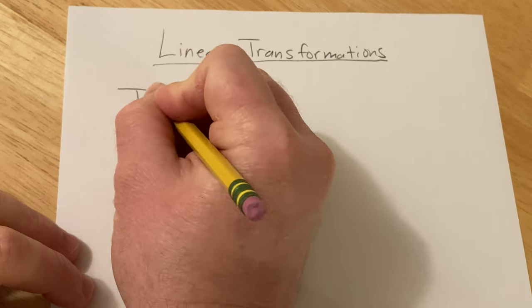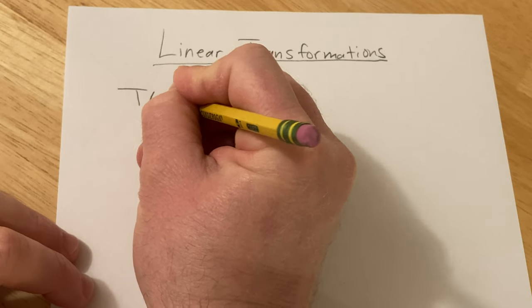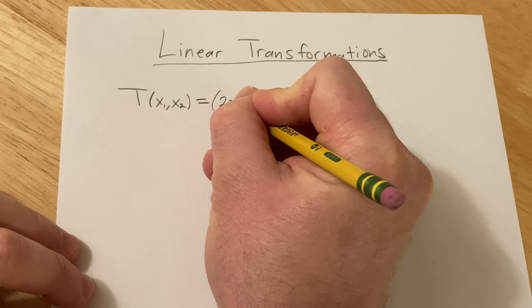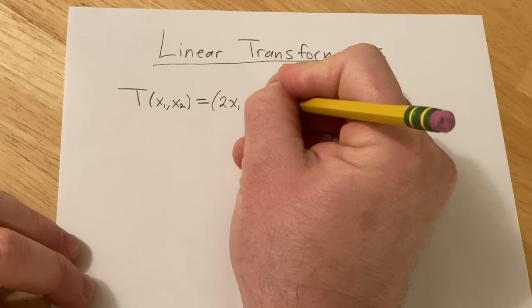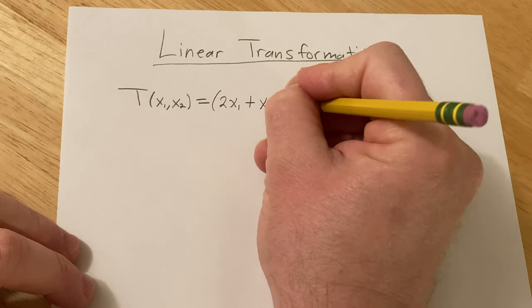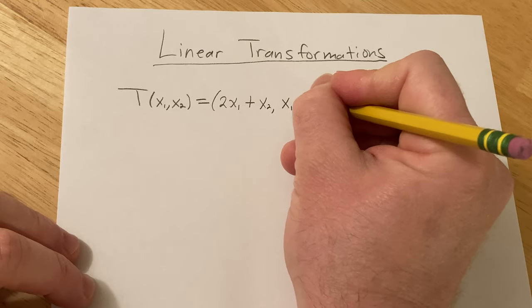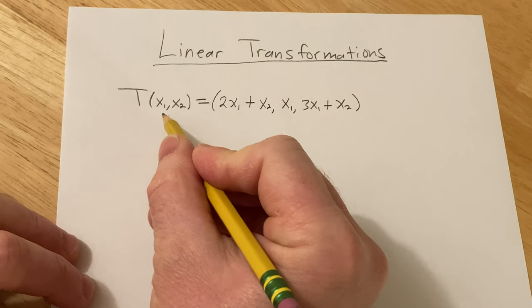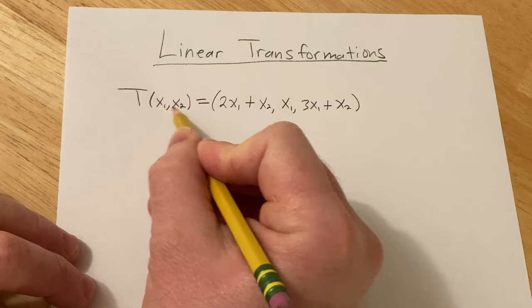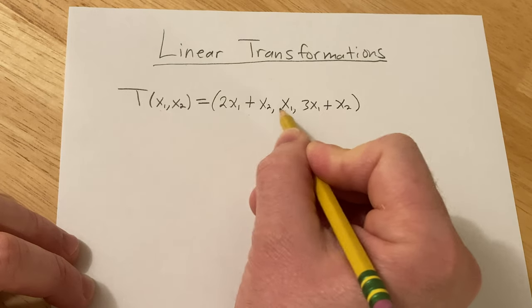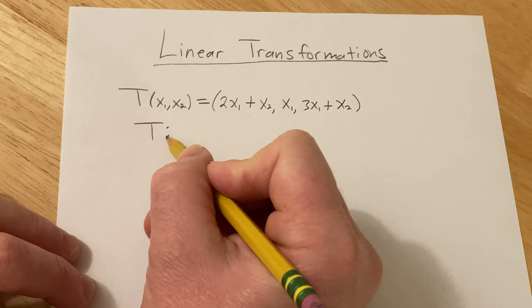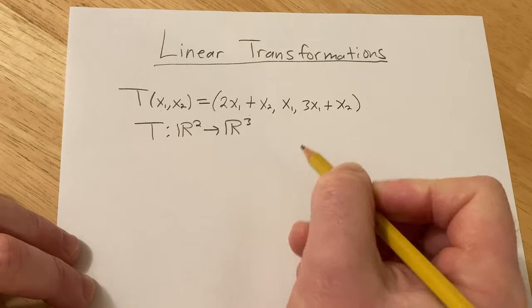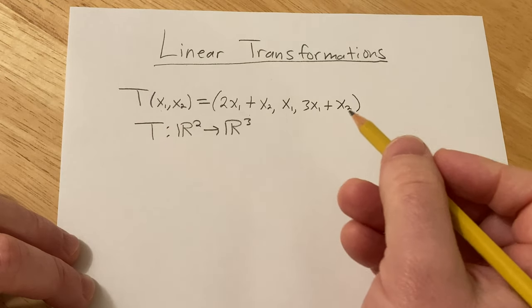Say we have a linear transformation T and it takes x1, x2 and let's say that goes to 2x1 plus x2, then x1, and then 3x1 plus x2. So T takes a vector in R² because this is two dimensions and it takes it to a three-dimensional vector. So in this case, T maps R² into R³. And the question is, what is the matrix for this linear transformation?